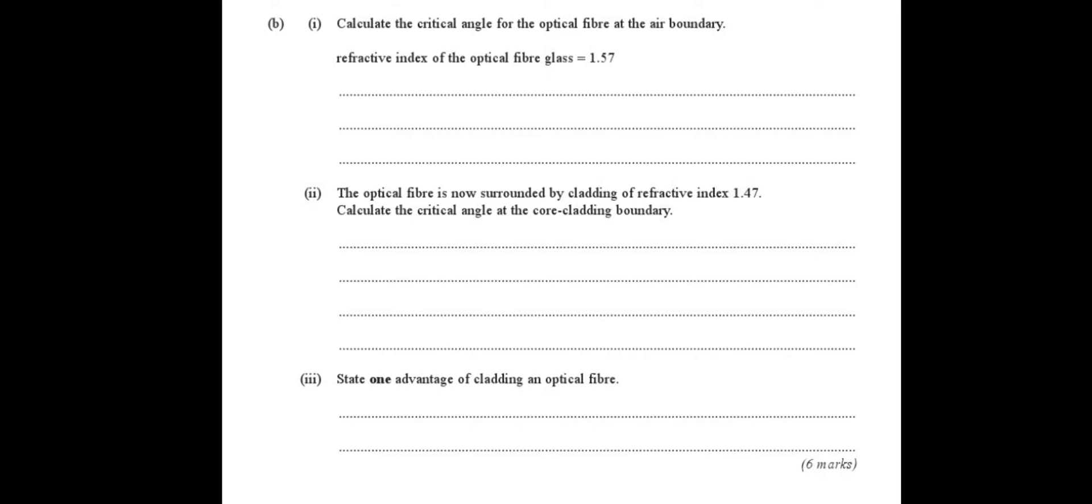So if you want to pause and answer these. So the first one, calculate the critical angle for the optical fiber at the air boundary. So we've got the refractive index of the fiberglass, 1.57. So if you remember back to the last lesson, the critical angle, sine theta c, is equal to N2 over N1.